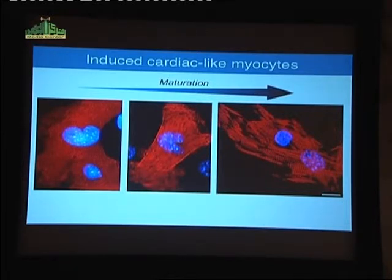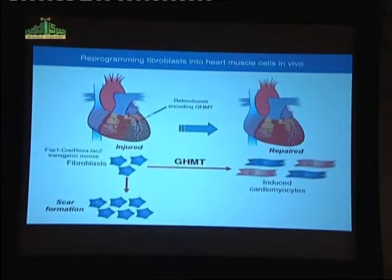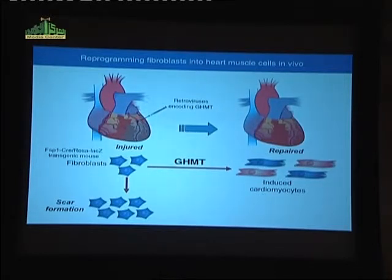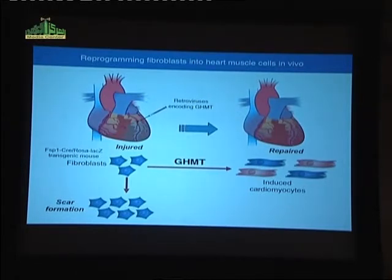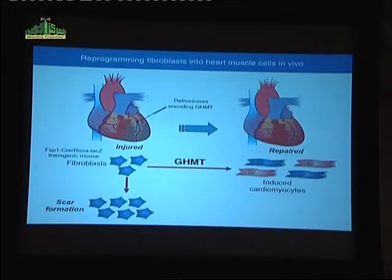Could we introduce these cardiogenic transcription factors into the heart in vivo and divert fibroblasts from the formation of a scar? This requires precise lineage markers to trace the fate of fibroblasts in vivo. The best known fibroblast marker was a protein called fibroblast-specific protein, Fsp1, with that promoter driving a Cre recombinase crossed into a mouse line with a floxed ROSA-lacZ — so this Cre will activate lacZ and turn fibroblasts blue. We then induce a myocardial infarction and inject with retroviruses encoding GHMT.